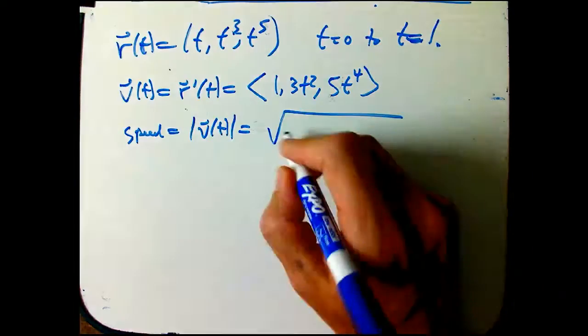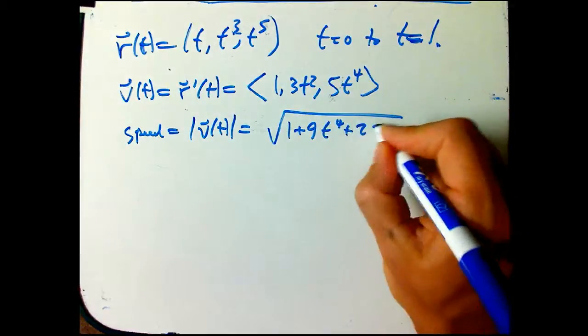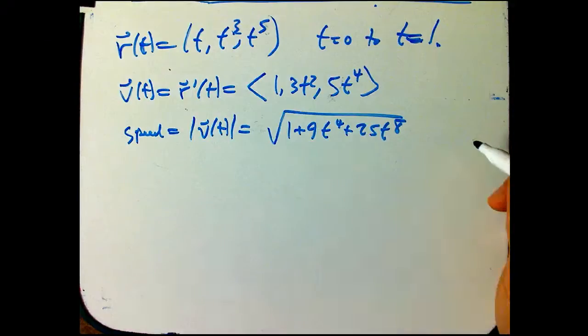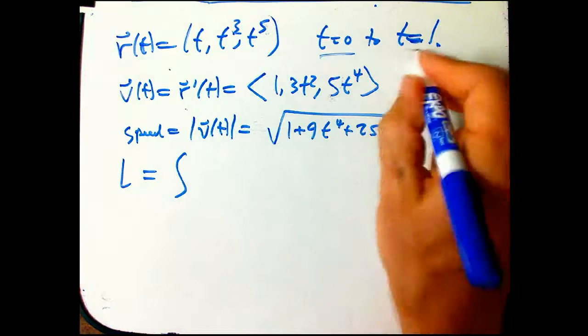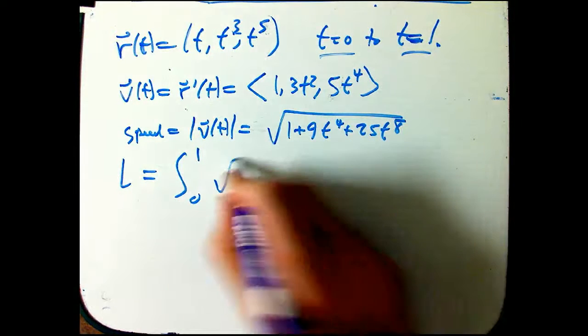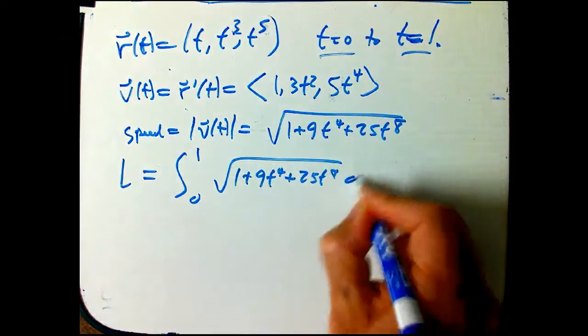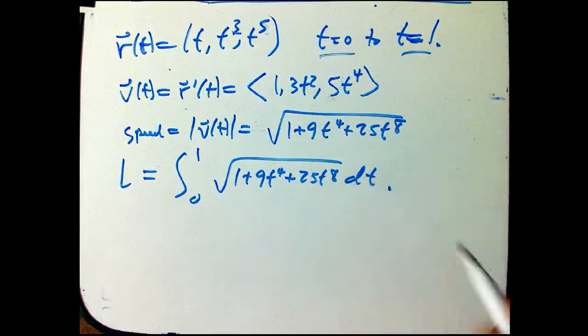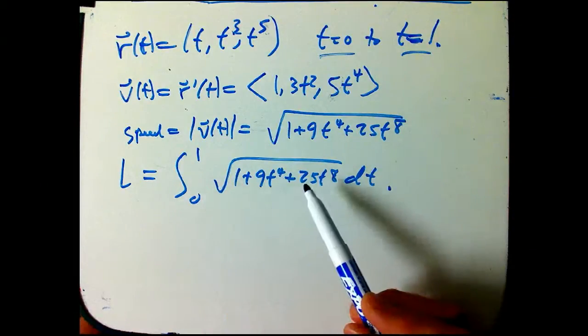Where it gets bad is when we put it in an integral. It should be just the integral from 0 to 1 of that square root quantity dt. Suddenly, wait a minute. That's not so great. Algebra is not so hard, but putting nasty algebra into calculus, that's what makes it hard.